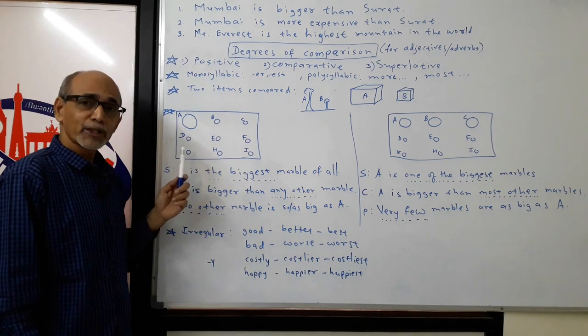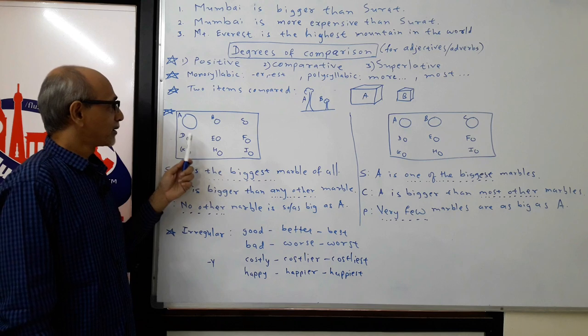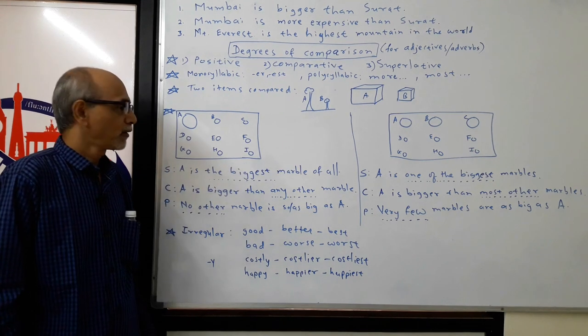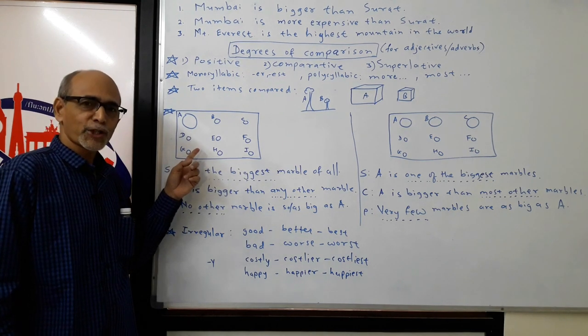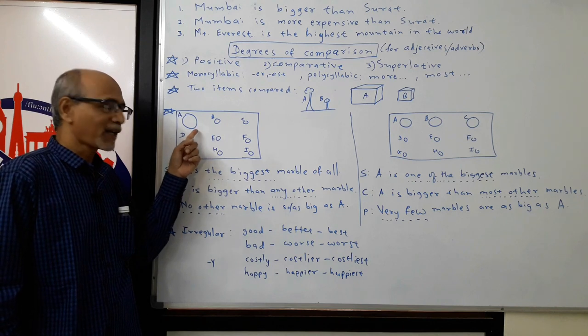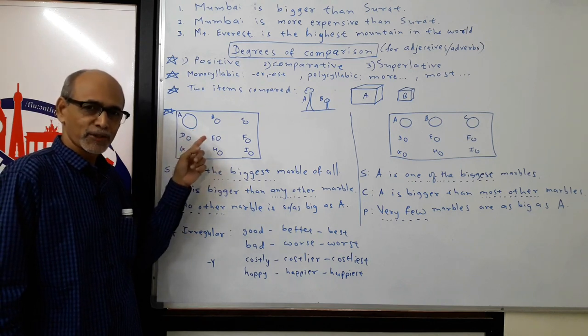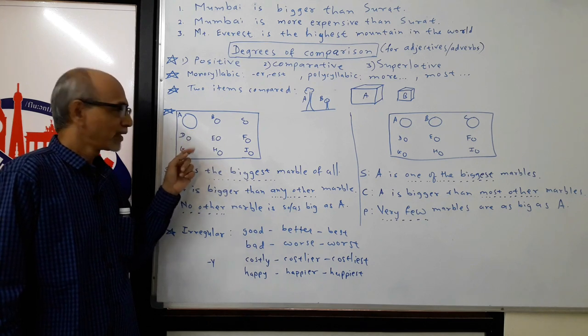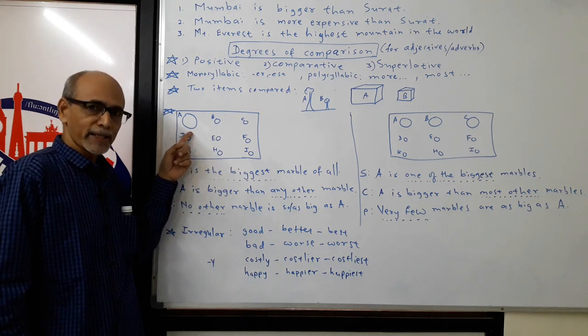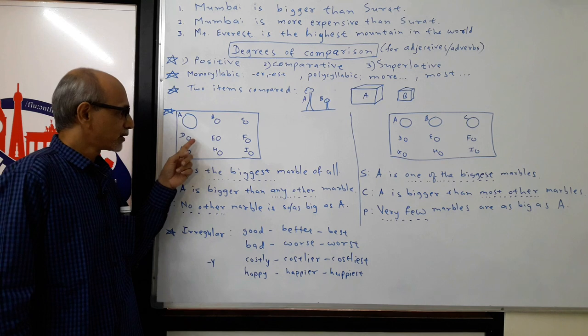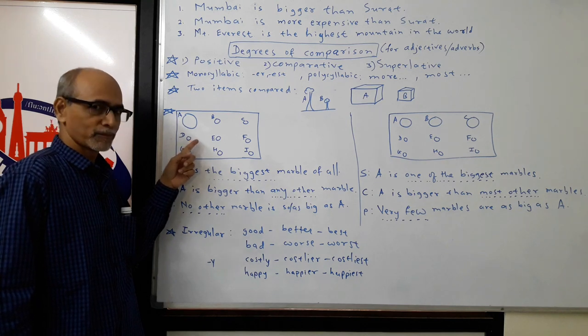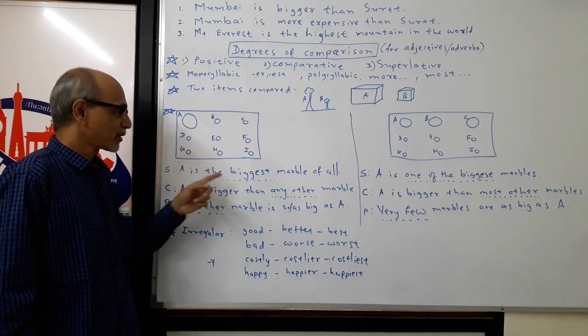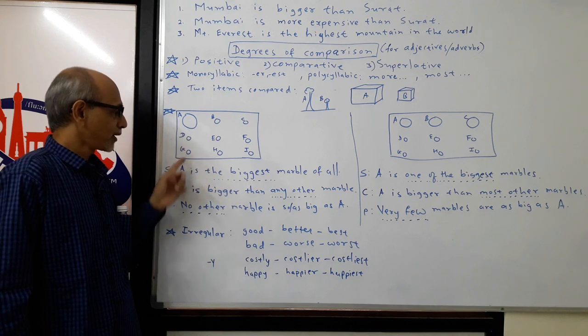When you have more than two items, there are two possibilities. For example, in a situation like this where only one item is different from the rest, if these are marbles, you can say marble A is the biggest marble of all. A is the biggest marble of all. That is superlative.